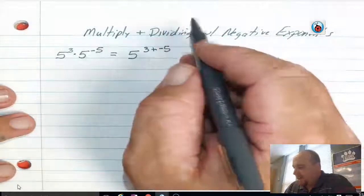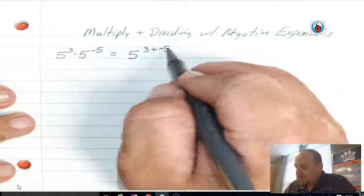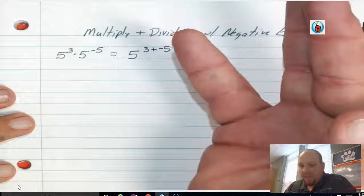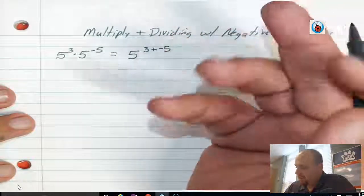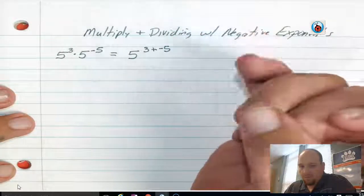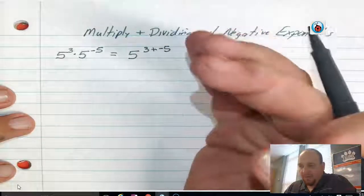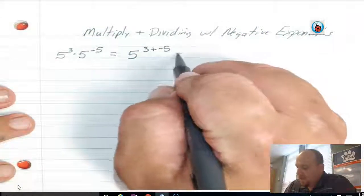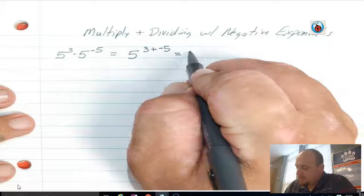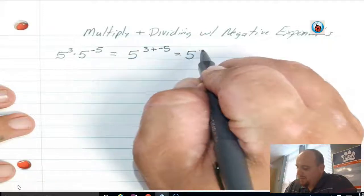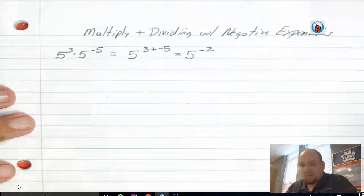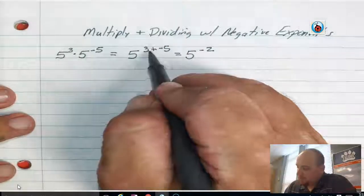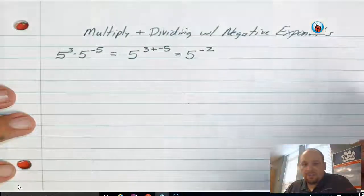So I've got to think back to what is 3 plus negative 5 equal? Well, if I have 3 and I take away 5, I end up with 2, 1, 0. That's only 3. I've got to go back 2 more. I end up with negative 2. So I end up with 5 to the negative 2 power, because 3 plus negative 5 is equal to negative 2.